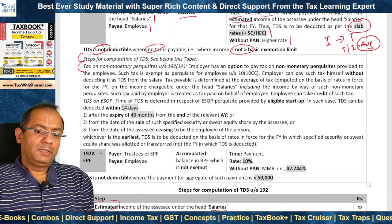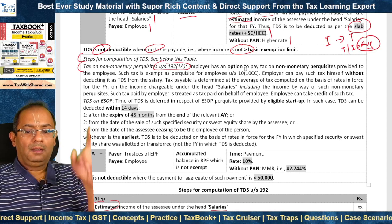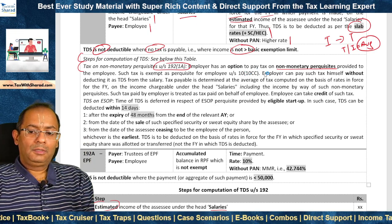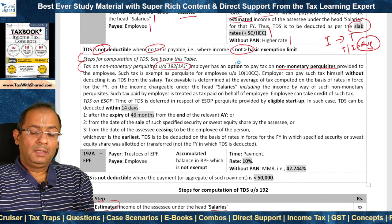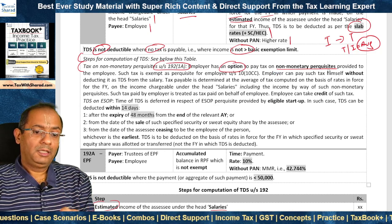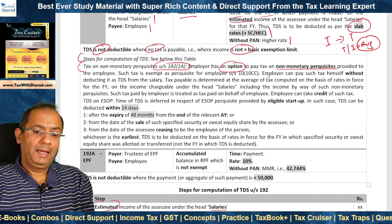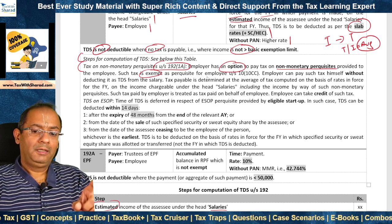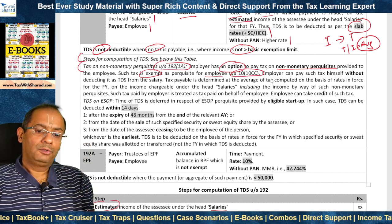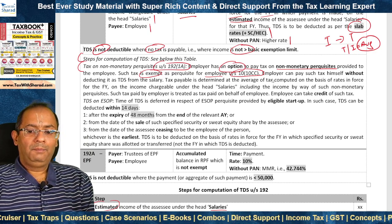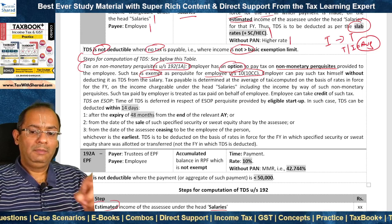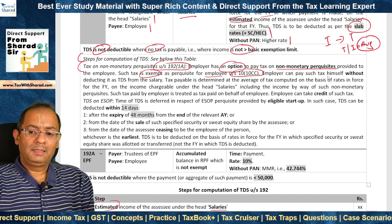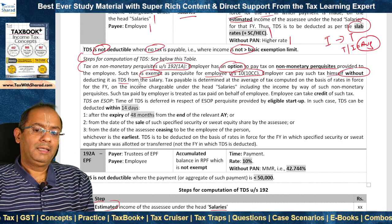Under section 192(1A), the employer may provide non-monetary perquisites to the employee on which tax is payable. The employer has an option to pay the tax on these non-monetary perquisites on behalf of the employee. Such tax is exempt as a perquisite in the hands of the employee under section 10(10CC), and the employer is not allowed a deduction in computing PGBP income on account of such tax paid. The employer can pay such tax himself without the need to deduct it as TDS from the salary.